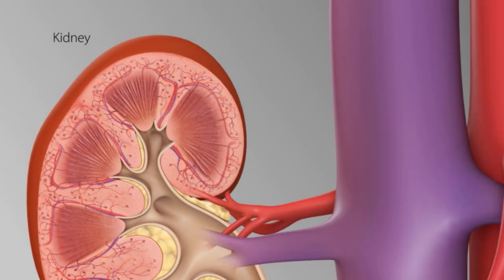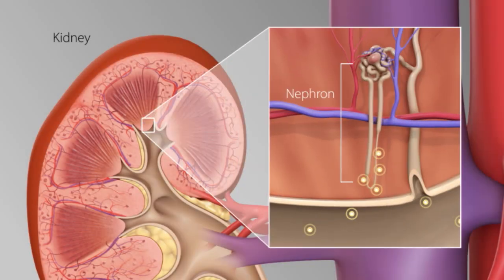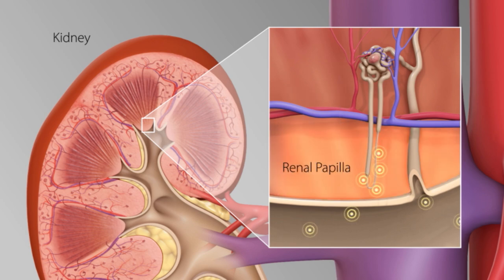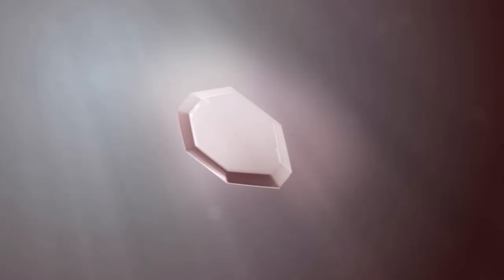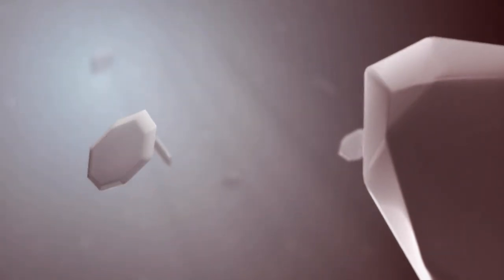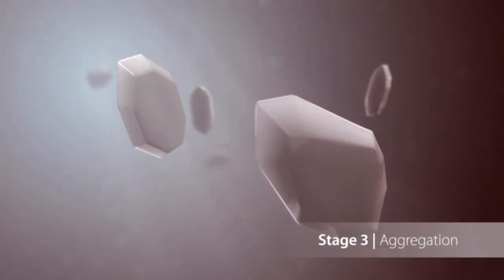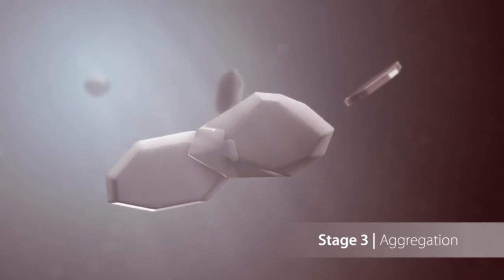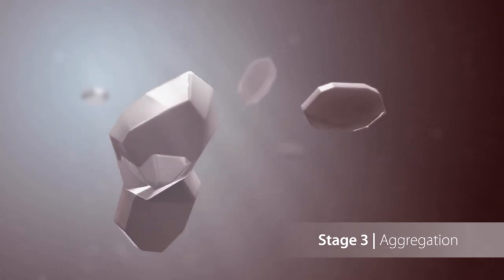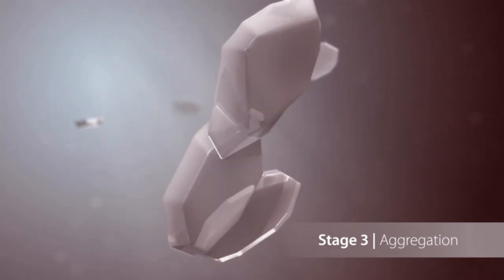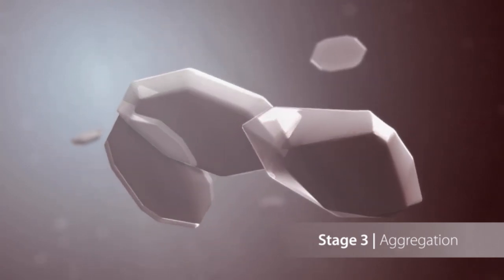The tiny crystal formations travel down the nephron, and are usually deposited at the renal papilla, where they undergo the next major phase: growth. Crystals that have already formed then begin to stick together, forming large aggregates. As we can see, crystals can aggregate very quickly.